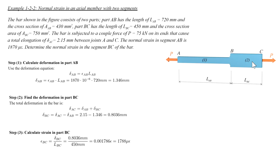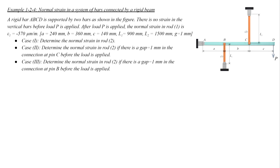These two problems were similar, where two elements were connected head to head and the total deformation was simply the sum of its components. In the next problem, we talk about a more complicated case where the elements are not directly connected together. There are two bars, and the horizontal beam shown in blue is connecting element 1 and element 2 together.